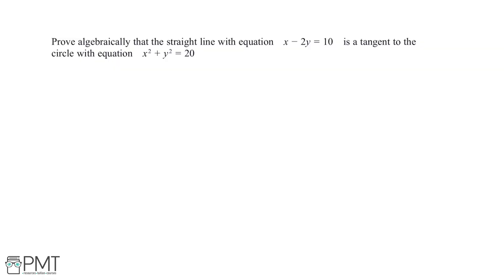Prove algebraically that the straight line with the equation x minus 2y equals 10 is a tangent to the circle with equation x squared plus y squared equals 20. In order to prove that a straight line is a tangent to a circle, we need to prove that it only intersects the circle once.